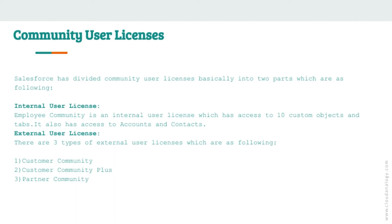There are three types of external user licenses. First is Customer Community, which is best suited for organizations with a large number of external users — a Customer Community can hold up to 7 million users. Second is Customer Community Plus, best suited when there are an unlimited number of logins for managing customer support.